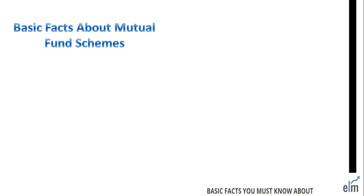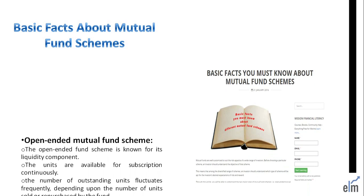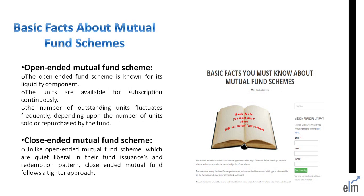Let us know the basic facts about mutual fund schemes. There are two types: open-ended and close-ended. Open-ended schemes are known for their liquidity — units are available for subscription continuously, and the number of outstanding units fluctuates depending upon units sold or repurchased. Close-ended schemes, unlike open-ended ones which are liberal in fund issuances and redemption, follow a tighter approach.